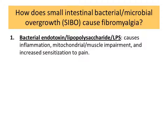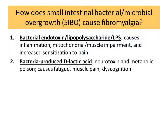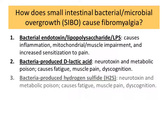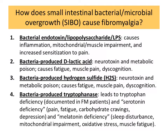First of all, gram-negative bacteria — a very common class of bacteria in the intestines — produce something called endotoxin, also called lipopolysaccharide, commonly abbreviated as LPS. This causes low-grade systemic inflammation, increased intestinal permeability, and mitochondrial and muscle impairment, as shown in clinical trials with humans. It also increases sensitization to pain. When we look at the clinical picture of fibromyalgia, we see low-grade inflammation, mitochondrial impairment, muscle fatigue, and heightened sensitivity to pain — often described in the neurophysiologic literature as central sensitization. In my opinion, bacterial endotoxin is one of the major triggers of that phenomenon.